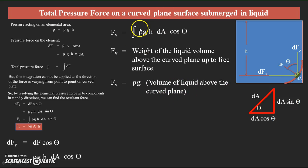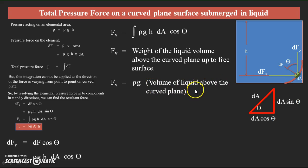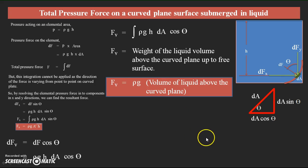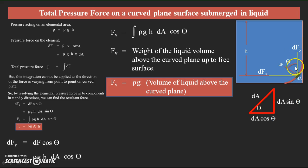With ρg as a constant, and h·dA·cosθ as the elemental volume term, the volume of the elemental strip is the volume of liquid present through the curved plane surface, giving the total volume of liquid above the curved plane. This confirms that Fy = ρg × volume of liquid above the curved surface — a force acting over the curved surface in the vertical direction equal to the weight of the liquid present over the curved plane.